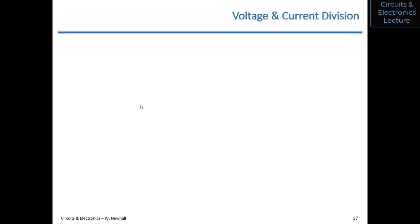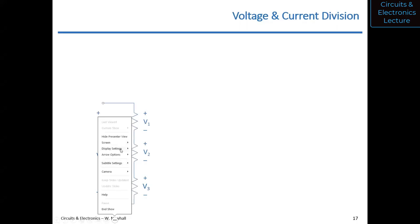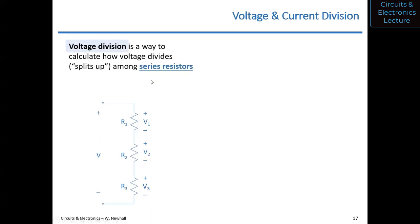Last time we covered Ohm's law, series resistors, and parallel resistors. So I want to continue with resistive circuits and resistive circuit analysis. We're going to talk about voltage division and current division, which you might have covered before — this might be a review — but I'd like to go through the derivation so you understand why it works and get some practice analyzing circuits. So let's first talk about voltage division. Voltage division applies to series resistors.